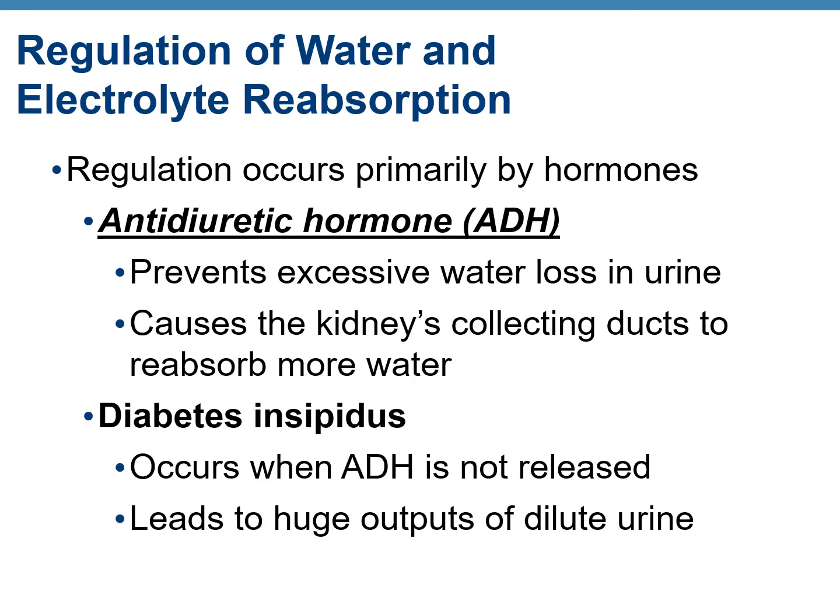Regulation of water and electrolyte reabsorption is mainly done by hormones. Two important hormones: the first is anti-diuretic hormone (ADH), which prevents water loss and dehydration. It causes the kidneys' collecting ducts to reabsorb more water. In the absence of ADH or if ADH is not working efficiently, a disease known as diabetes insipidus results, producing a large amount of urine.